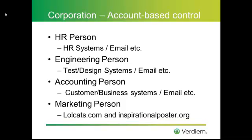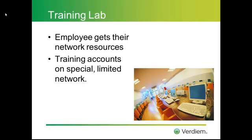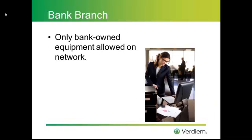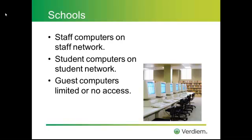Accounting might access customer and business systems, and so forth. A training lab could be configured so that when an employee plugs in their computer or logs in with their account, they're able to get their normal network resources like email, file servers, or printers. But a training account or training PC can be configured to be on a network with very limited access. In a bank branch, a sophisticated hacker might plug a tiny device into a network interface and sniff traffic to gather information they shouldn't have. A bank branch that implemented port-based network access control could configure things so that only authorized and known computers are able to access the network. In a school, computers owned by staff or where a staff member logs in are able to access staff resources like student information and grades, while students might access training labs, and a guest computer might only have access to the internet.